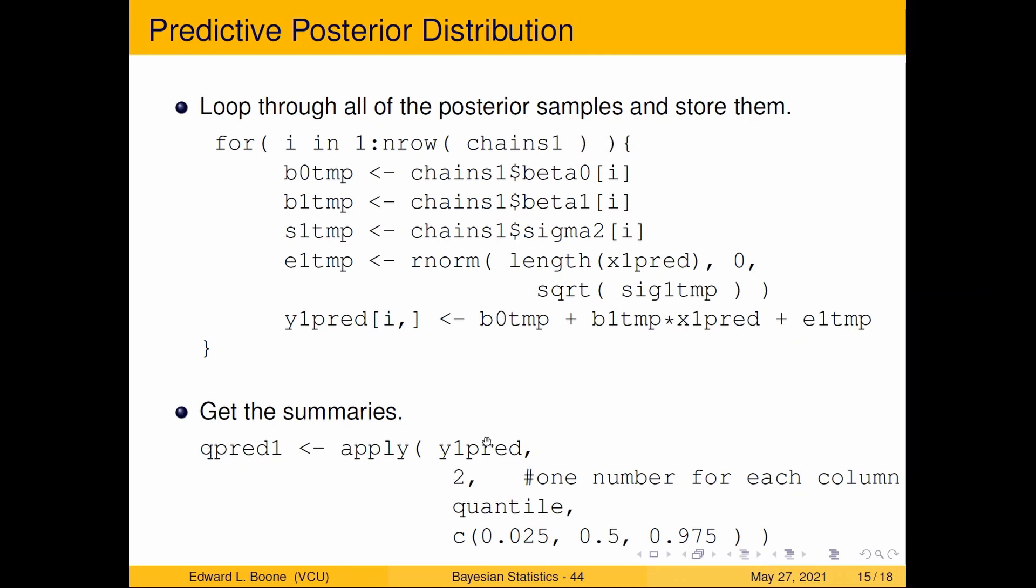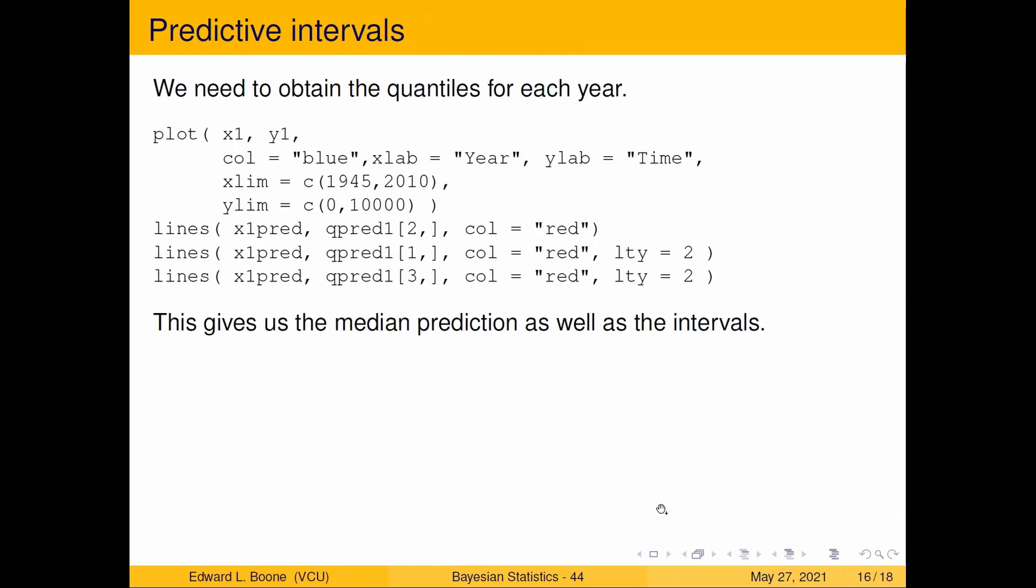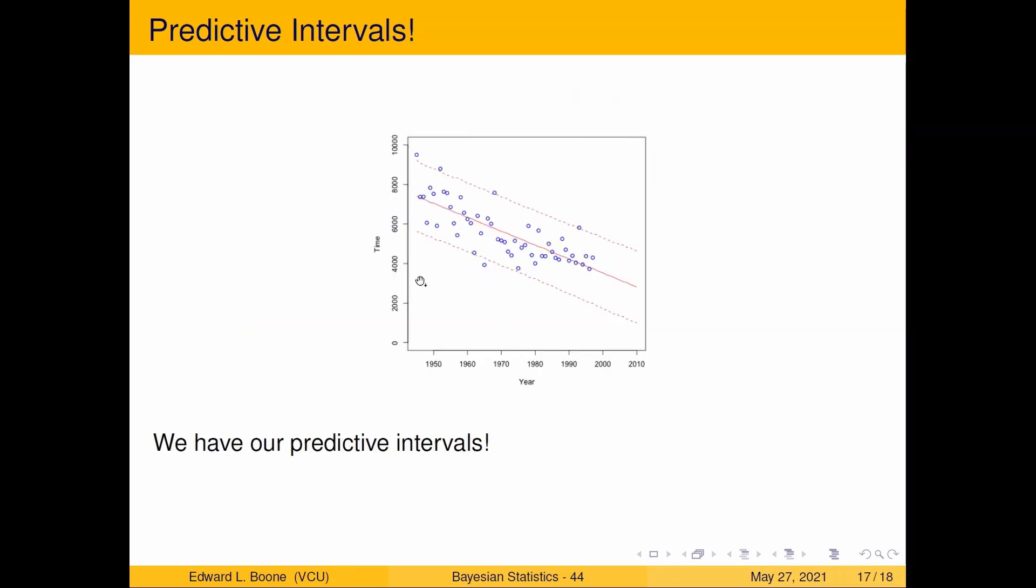I'm going to get 0.025, 0.5, and 0.975, so I'm going to have a lower bound, a median, and an upper bound. Then I'm going to plot them - just add them right onto my plot. Here's my data. The first one is the median, the second one is the lower bound, and then the upper bound. This is what it looks like.